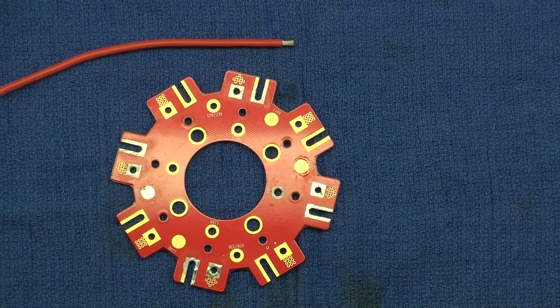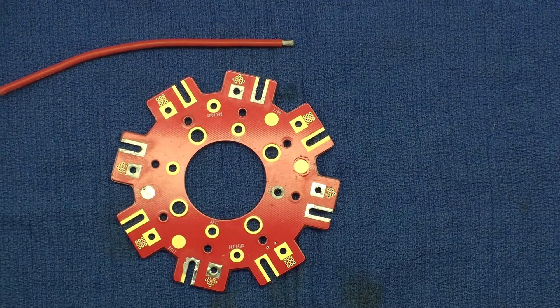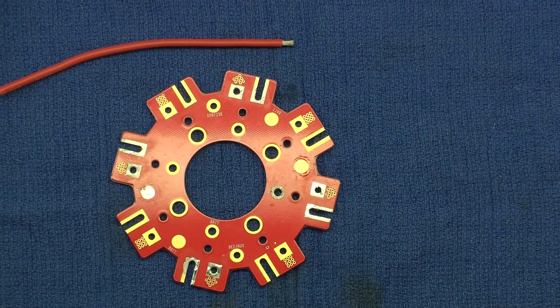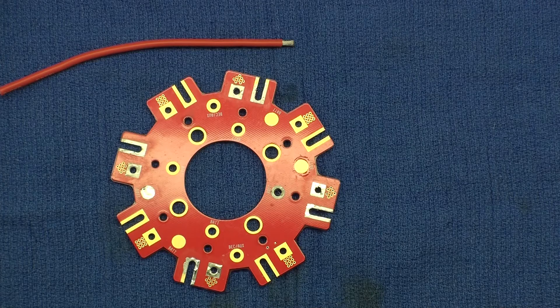Now we'll apply solder to the power distribution board's pad first. Make sure to provide enough solder to cover the whole pad and have a small mound of solder left.